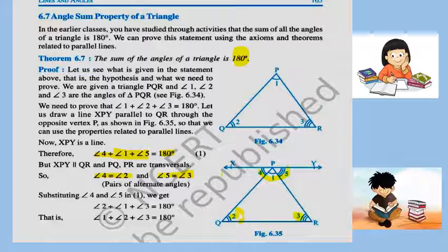Now recall the properties of alternate angles when two lines are parallel. Here angle 4 and angle 2 are alternate angles, and angle 5 and angle 3 are alternate angles. When the lines are parallel, alternate angles are equal. Now in the equation, we substitute angle 2 in place of angle 4, and angle 3 in place of angle 5. It becomes angle 2 plus angle 1 plus angle 3 equals 180 degrees, or in ascending order: angle 1 plus angle 2 plus angle 3 equals 180 degrees. Thus we have proved the sum of angles of a triangle is 180 degrees.